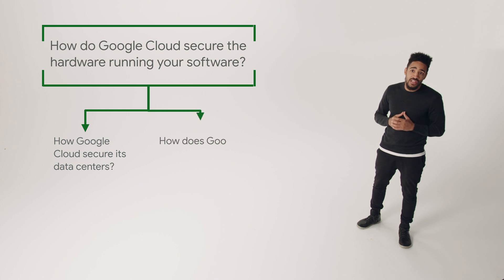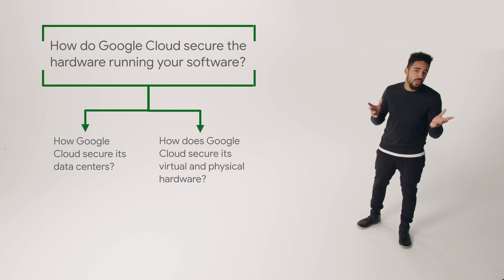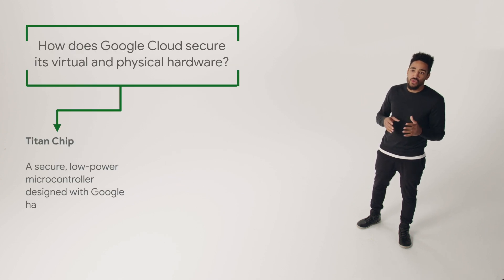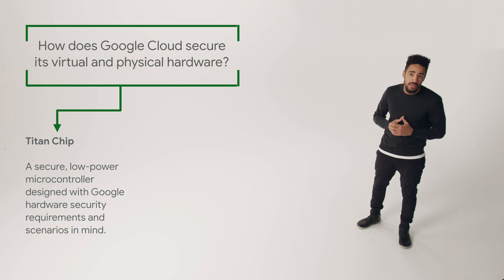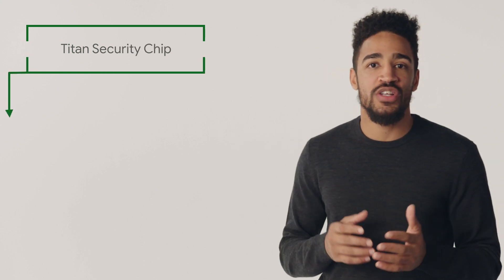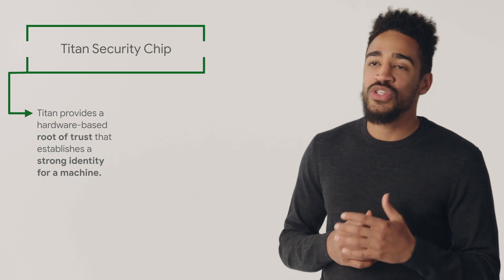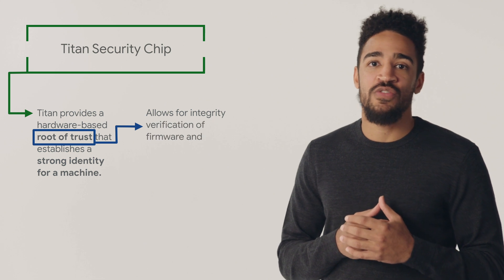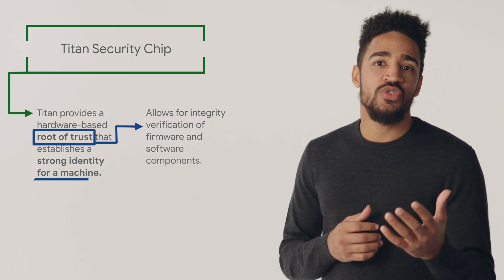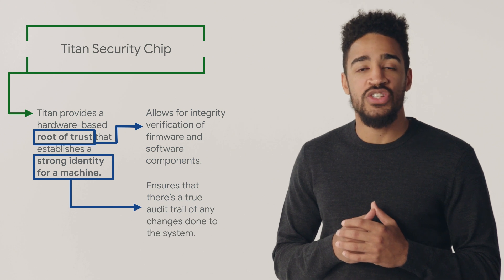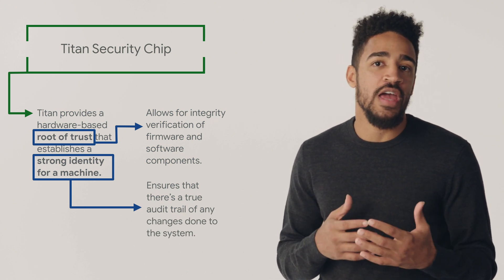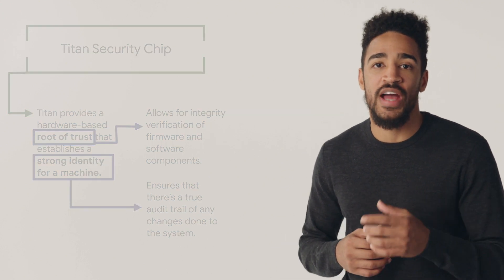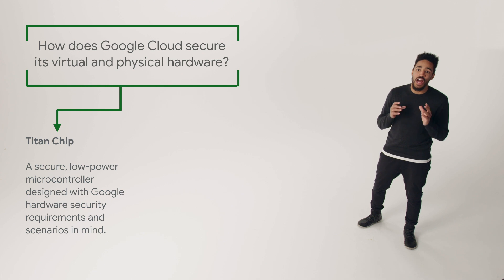So that's the physical defense of data centers, but what about virtual and real hardware security? There's the Titan chip. Titan is a secure, low-power microcontroller designed with Google's security requirements and hardware scenarios in mind. Titan provides a hardware-based root of trust that establishes a strong identity for a machine, which enables Google to make important security decisions and validate the health of the system. Titan offers integrity verification of firmware and software components, and tamper-evident logging capabilities help identify actions performed by an insider with root access.